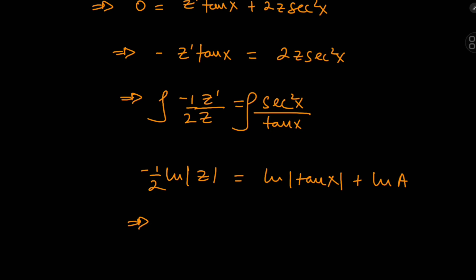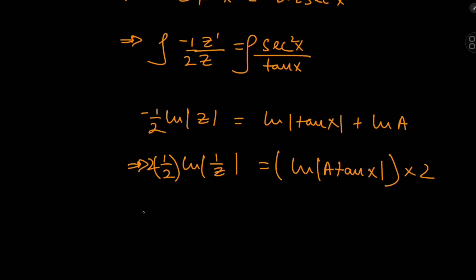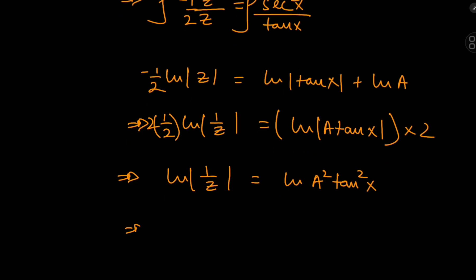Rearranging the logarithms, log(1/z)·(1/2) = log(a·tan(x)), and multiplying through by 2 gives log(1/z) = log(a²·tan²(x)). This implies 1/z = a²·tan²(x), or equivalently dx/du = a²·tan²(x).